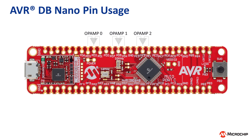In terms of analog, the AVR128DB48 microcontroller has three op-amps onboard. These op-amps can operate independently of each other, or they can be interconnected and cascaded depending on the configuration. The other pins on the screen correspond with the three op-amps on the device.